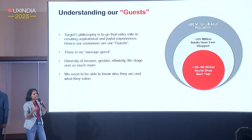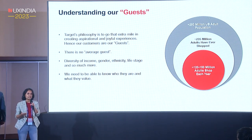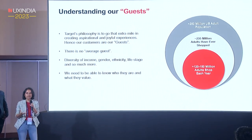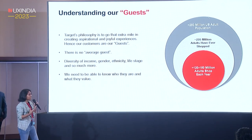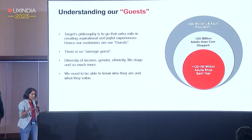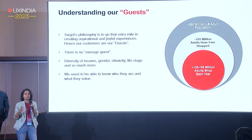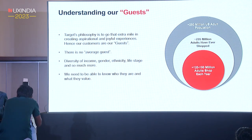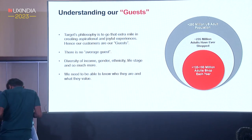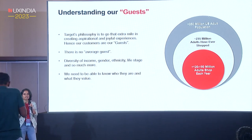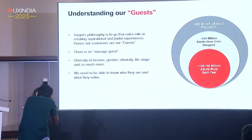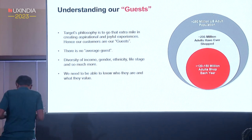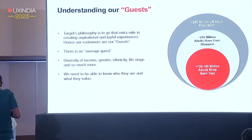When we say guests, just like Yogi said, we go that extra mile. It's not a transaction — it's about joyful, aspirational experiences. We celebrate the stories of the people who shop with us. At the same time, there is no average guest. With 150 million guests, how do you distill them into five or six personas? It's very hard. So we go into layers of diversity — income, ethnicity, gender — so many layers that change every month. We need to know who they are and what they value to be able to give them joy.